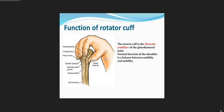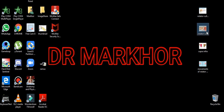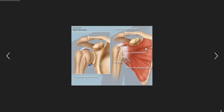The function of the rotator cuff muscles is that it holds the humerus and stabilizes the glenohumeral joint. You can see that the muscles are just holding the humerus like a hand. The rotator cuff is the dynamic stabilizer of the glenohumeral joint. Normal function of the shoulder is a balance between mobility and stability. This diagram shows the left humerus, though earlier we discussed the right.